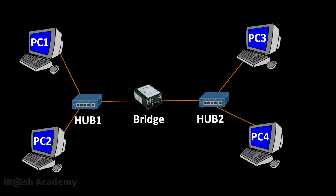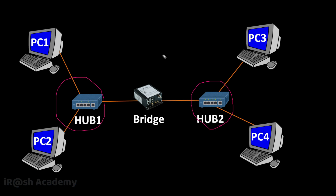The network bridge divides the single collision domain into two collision domains. One collision domain is presented by Hub 1 and is shared between PC1 and PC2. The second collision domain is presented by Hub 2 and is shared between PC3 and PC4. So the single collision domain from the previous scenario is divided into two, with only two devices sharing each collision domain. This means PC1 or PC2 can send or receive at a time, and PC3 or PC4 can do the same independently.